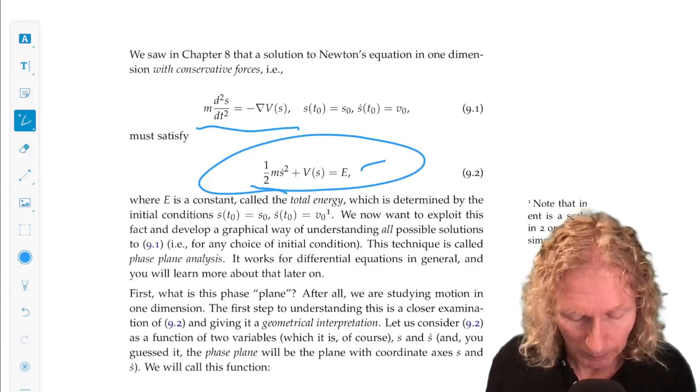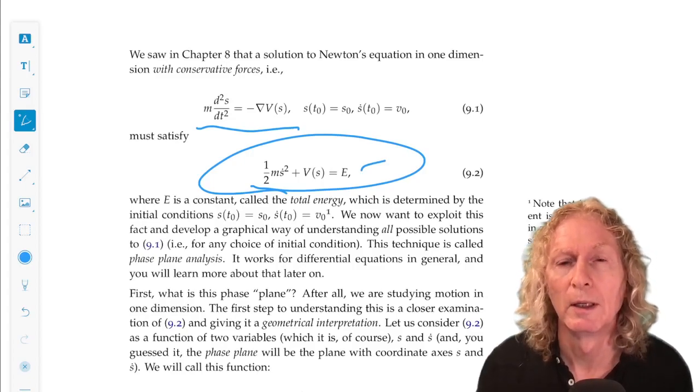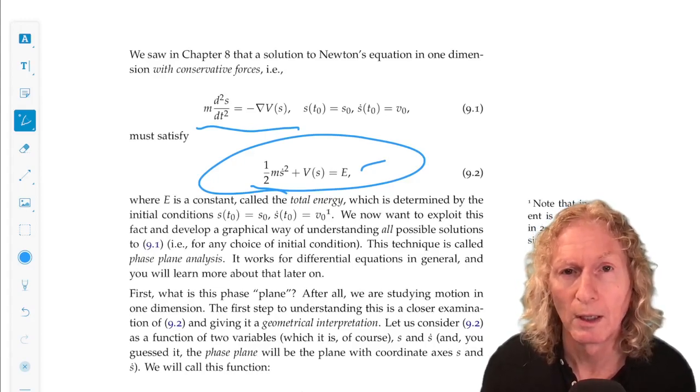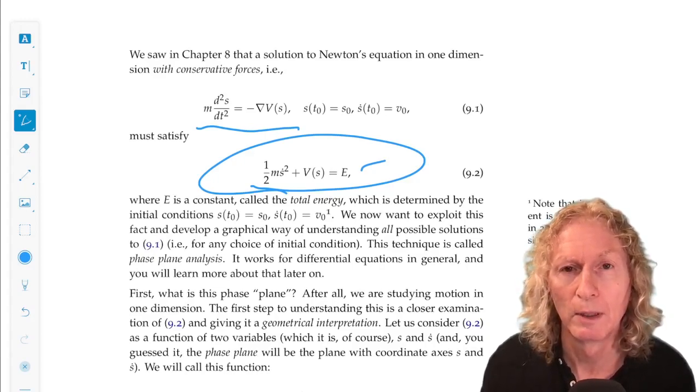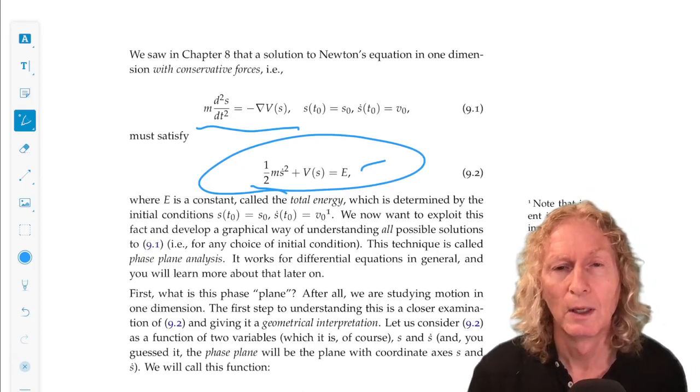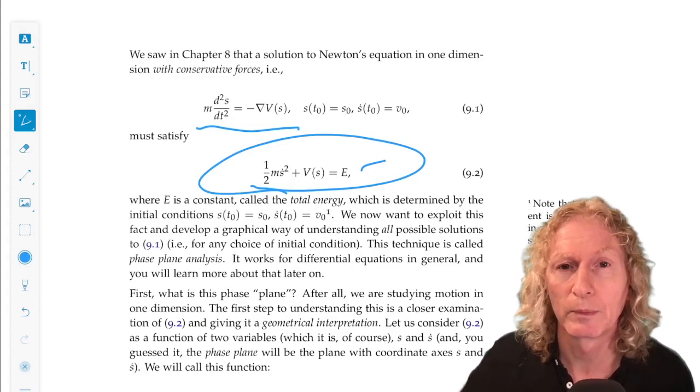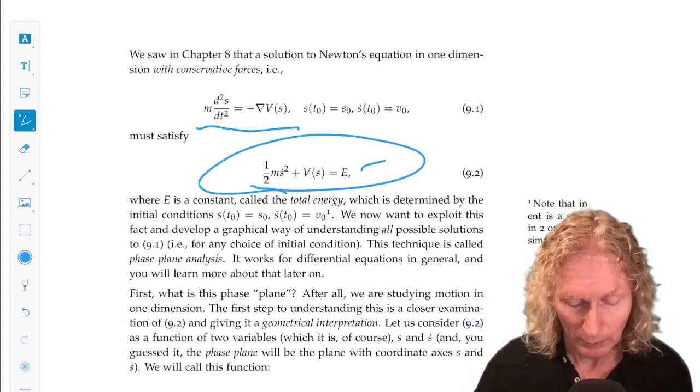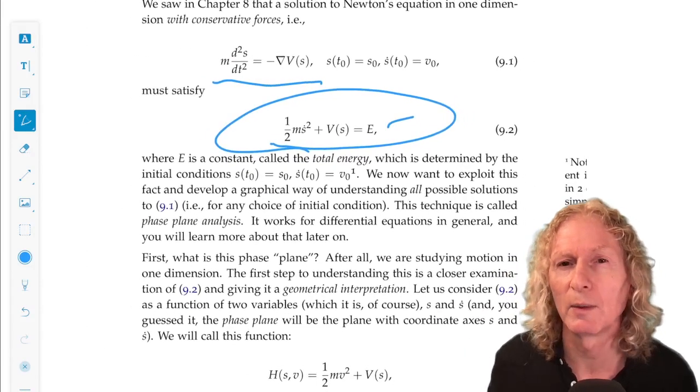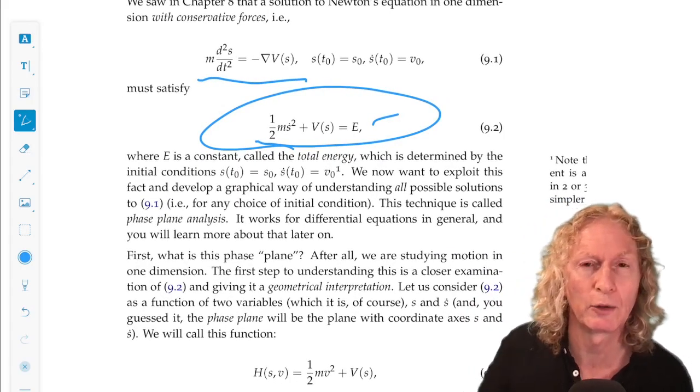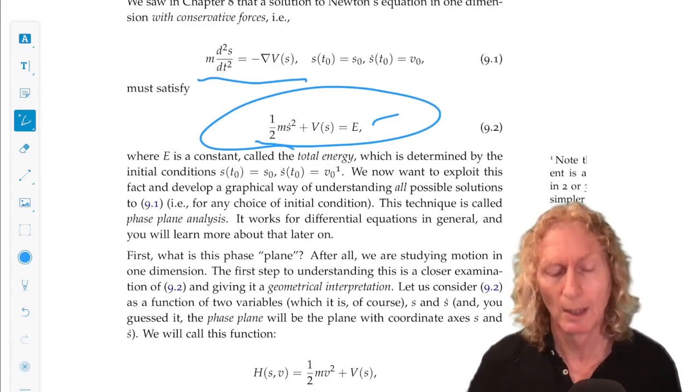Now, what is the phase plane? The phase plane is concerned with the properties of this energy function. So the plane is the space on which the energy function is defined, s and s dot. That's the plane where phase came from. That's an interesting historical fact that goes back to the work of Boltzmann, Gibbs, and Ehrenfest.